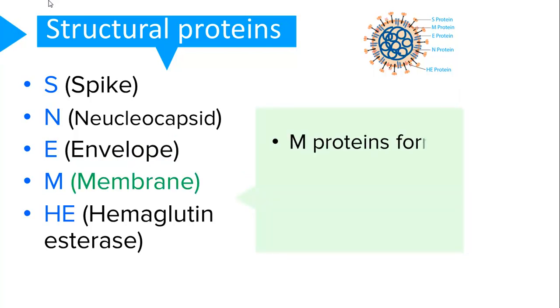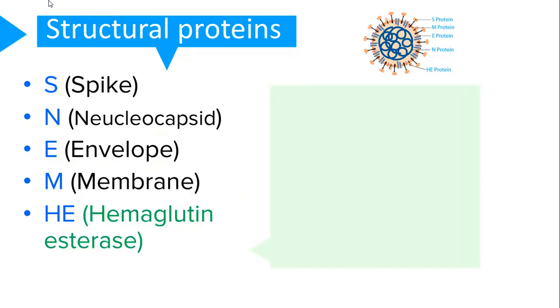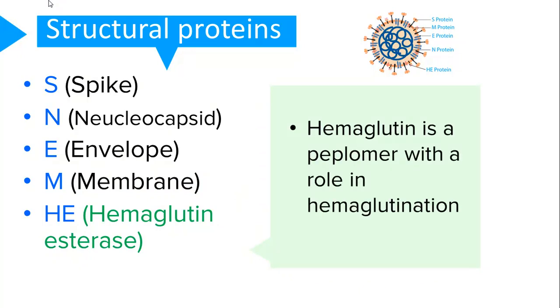The membrane protein is known to form a viral envelope. And lastly, the hemagglutinin-esterase protein is a peplomer which has a role in hemagglutination.